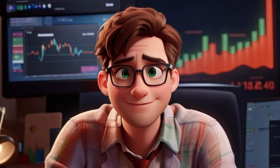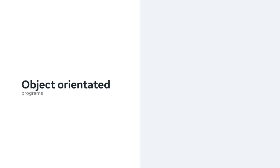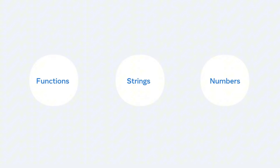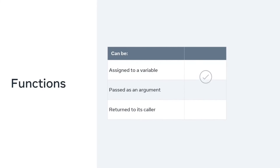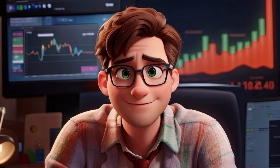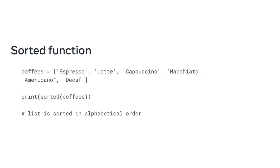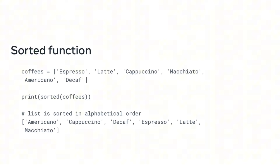Functions are considered standalone or independent, which aids the clean and elegant nature of the code. Many strongly typed object-oriented languages have incorporated functional programming into their structure. In order to support functional programming, the language needs to allow functions to be passed as an argument and also return a function to its caller. In Python, functions are first-class citizens, which means they have the same level as strings and numbers — they can be assigned to a variable, passed as an argument, or returned to its caller. Take, for instance, the sorted function, which accepts a list of items and returns it in sorted order. You can use it to list items in alphabetical order by passing a list to the sorted function.